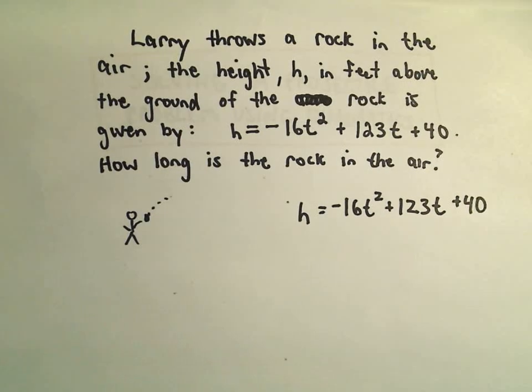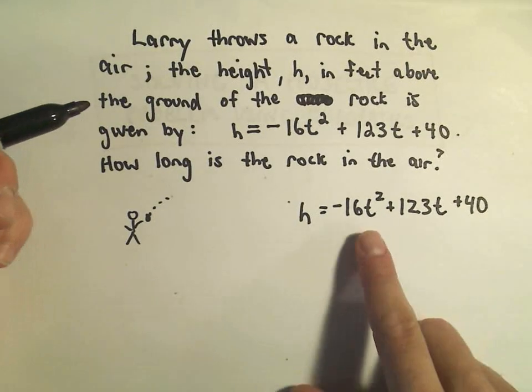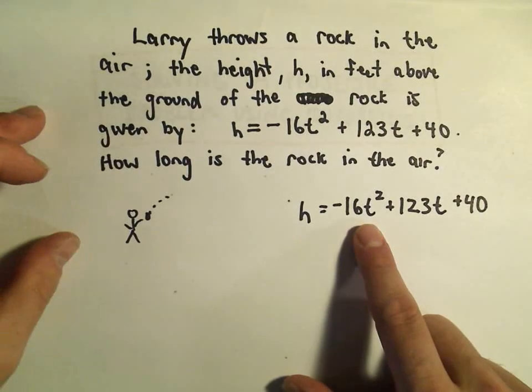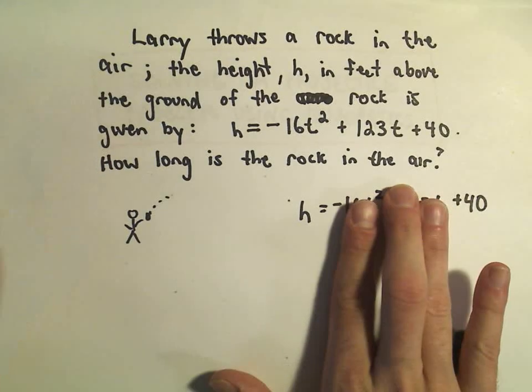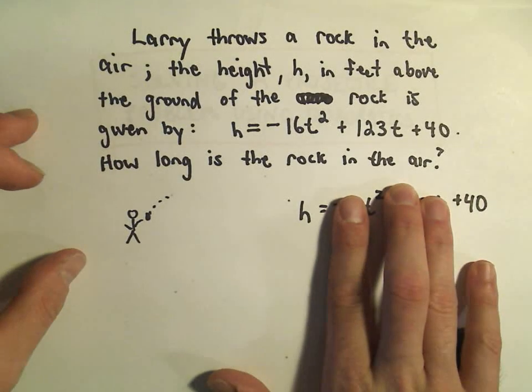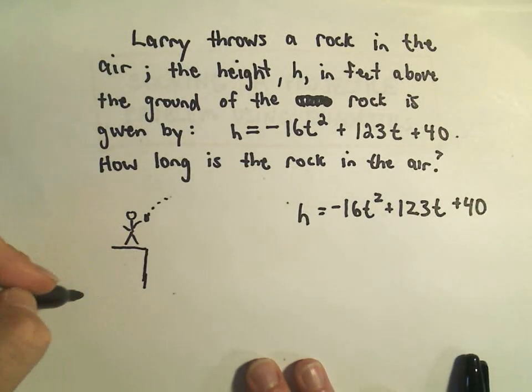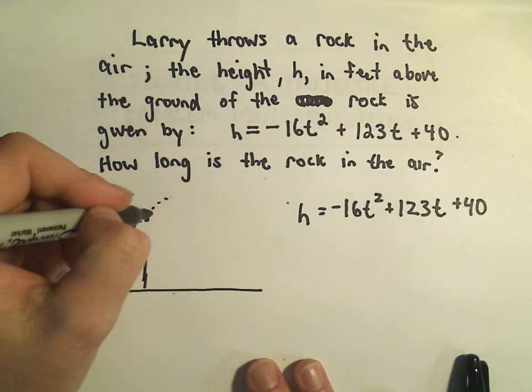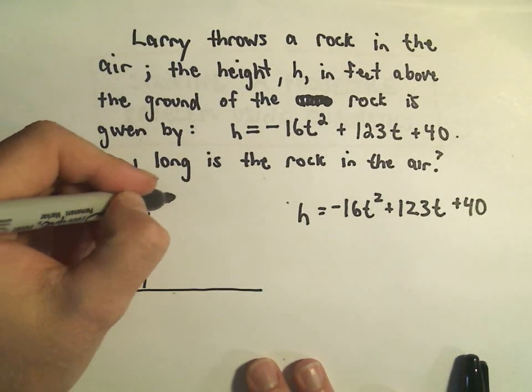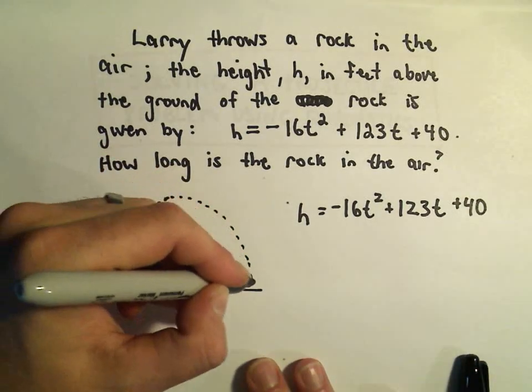This doesn't really matter in respect to the problem, but if you think about it, if you plug in t equals 0, notice the first two terms would be 0 and we would get a height of 40. So to me, that kind of tells me maybe Larry's standing on a cliff originally. So maybe he's 40 feet up in the air and throws the rock off and eventually it's going to hit the ground.